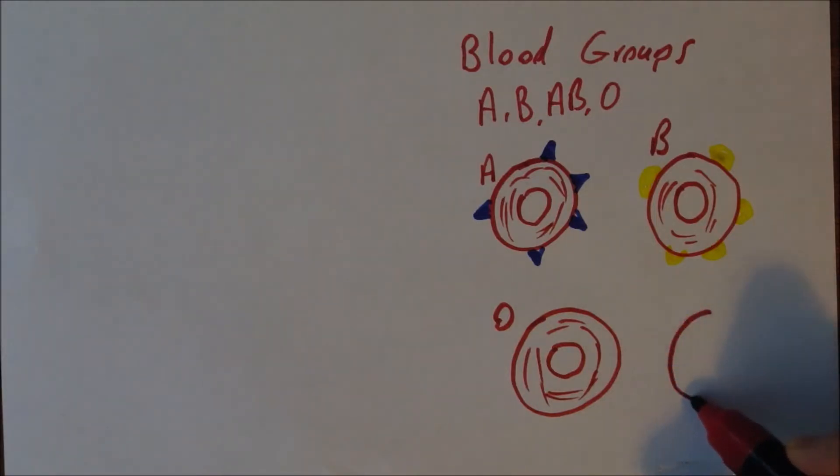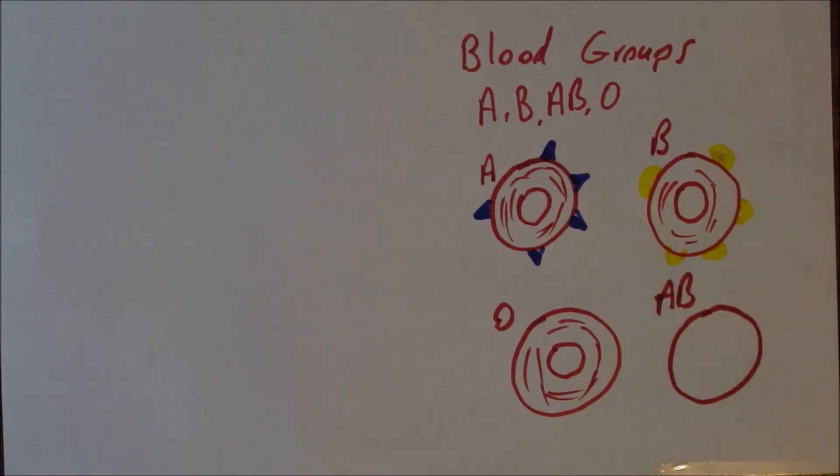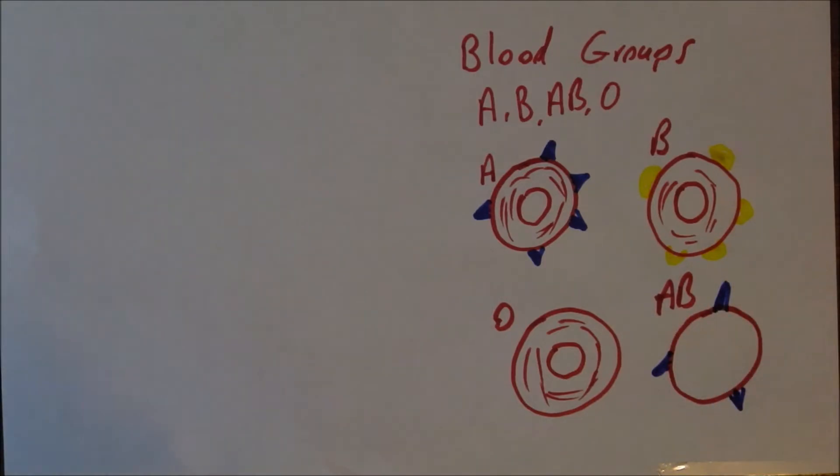And blood group AB, well that's going to have both. So we're going to have A antigens on the surface and we're going to have B antigens on the surface. Contains both.